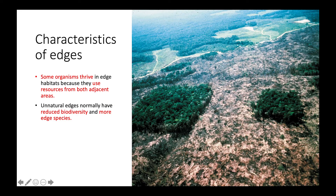A downside to edge habitats is that unnatural edges typically reduce biodiversity and have more edge species. This would be an example of an unnatural edge — because they've fragmented this larger forested area, we're going to have reduced biodiversity along that edge, because organisms are not going to be able to utilize the resources from the full-scale habitat they were used to prior to habitat fragmentation.